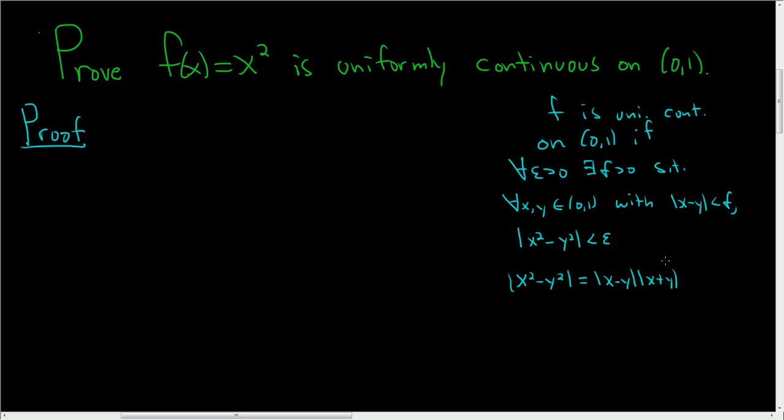Well, x and y are special - they're in the open interval (0,1). So they're both certainly less than 1. So x + y, well, we can certainly say that's less than 2. So this is less than |x - y| times 2, and then we want this to be less than ε.